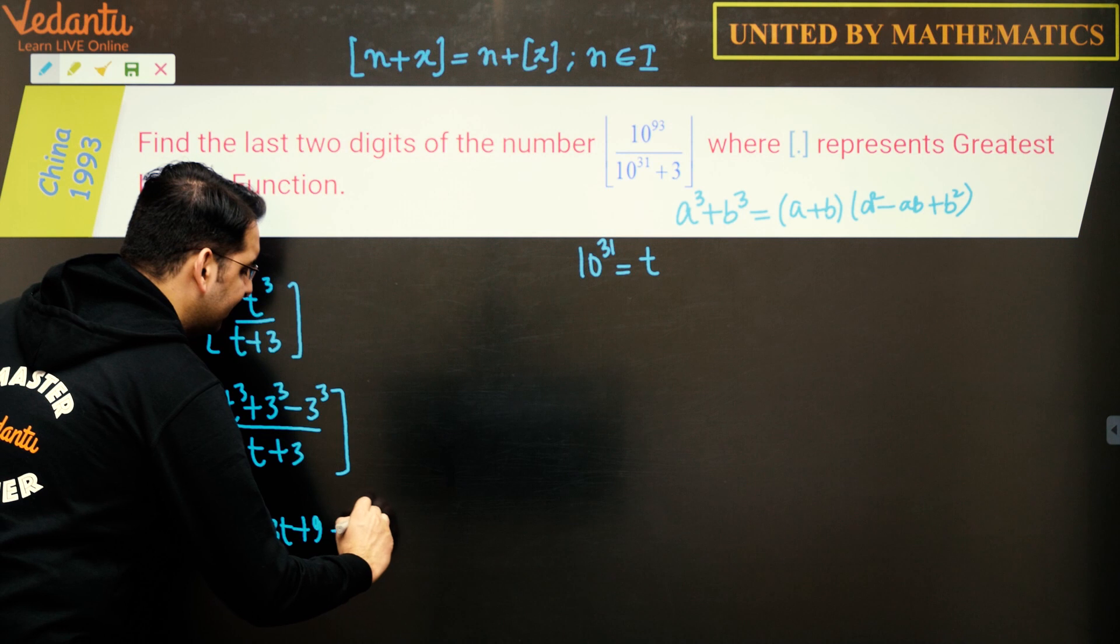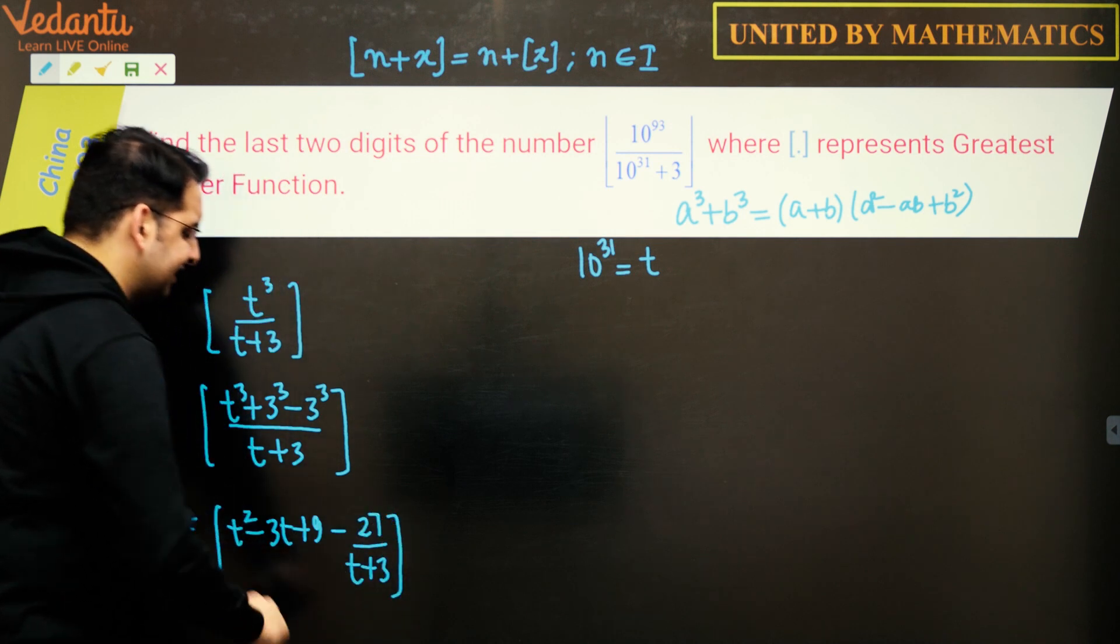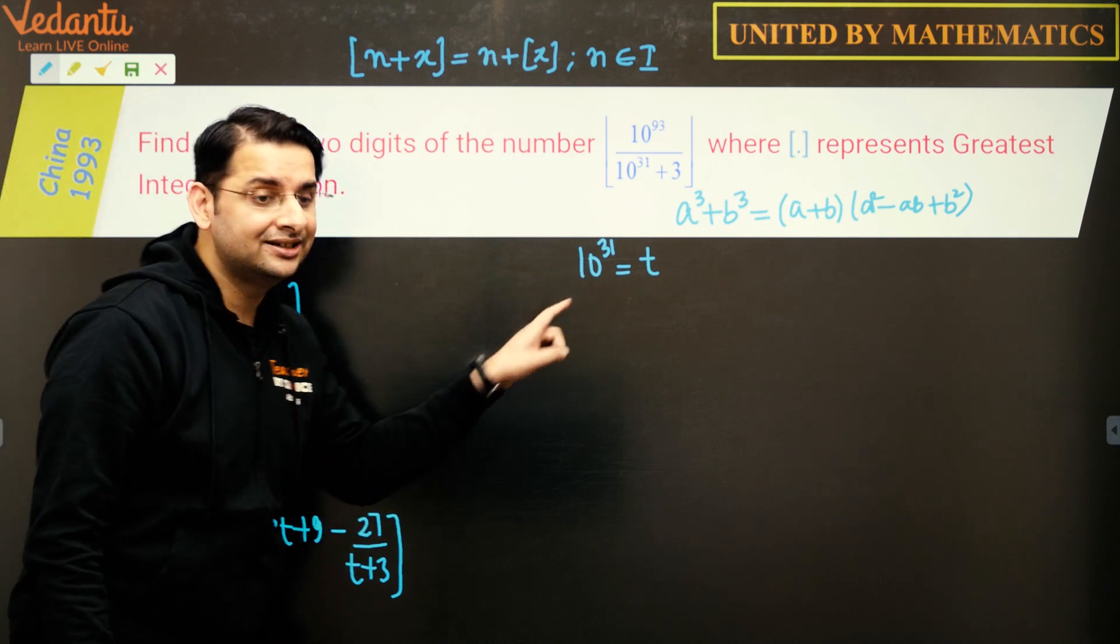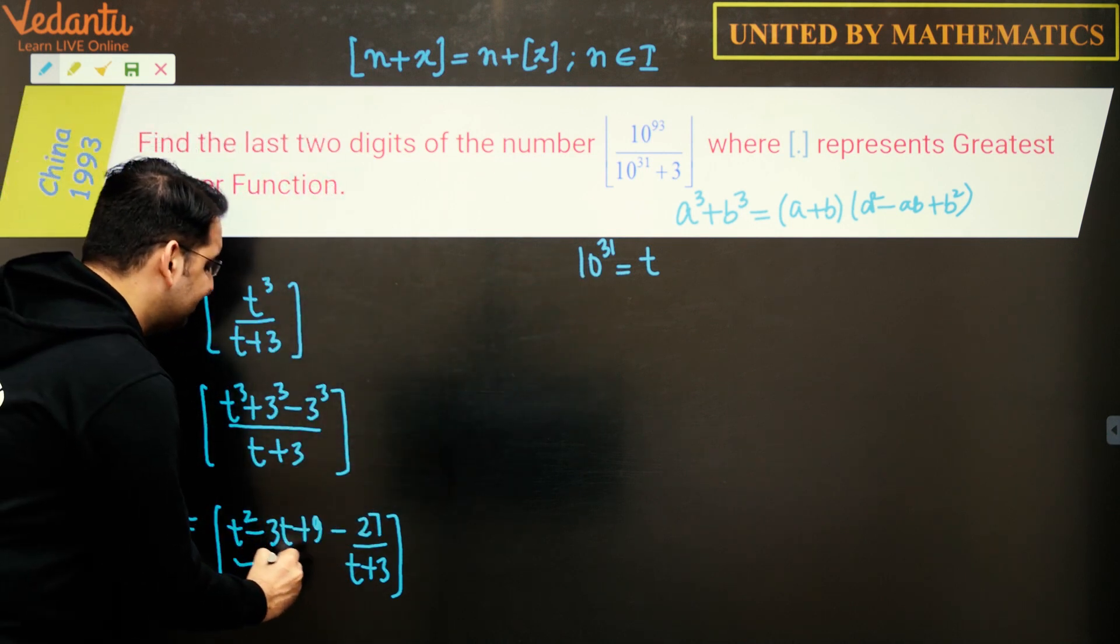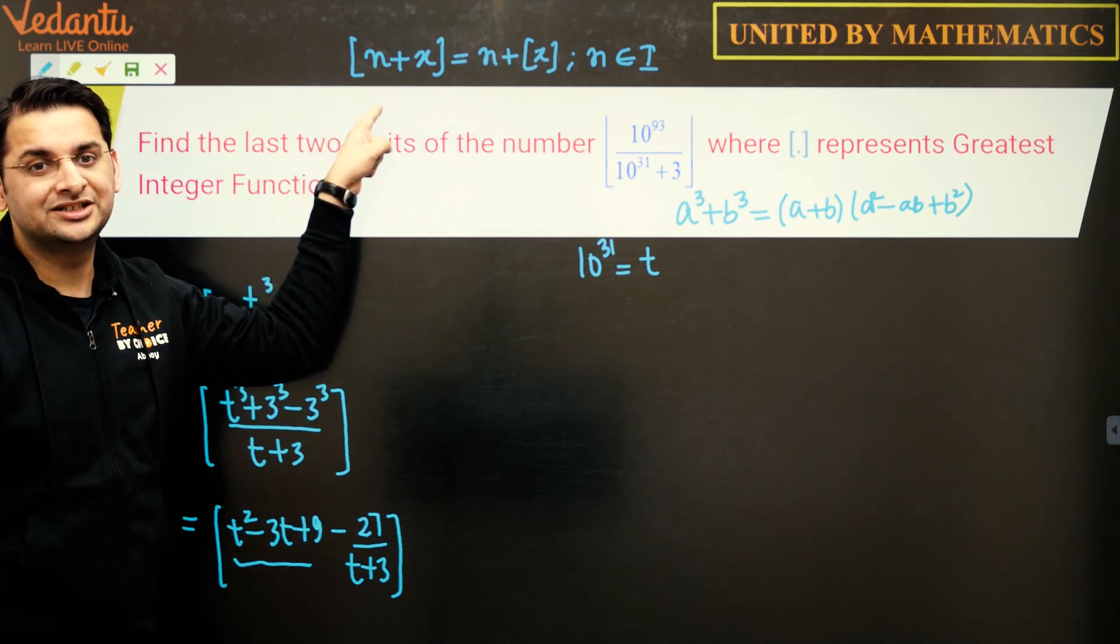Minus 27 upon t plus 3. So this gets simplified to this expression. Of course since t is an integer, t² minus 3t plus 9 is an integer, and if we apply this property, n can be taken out of the floor function.